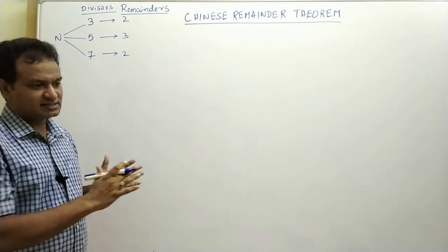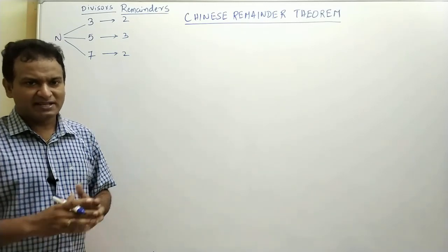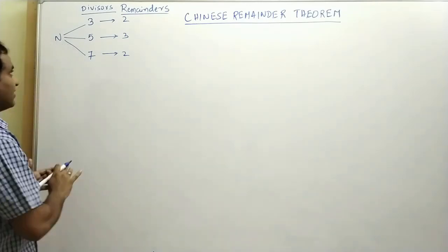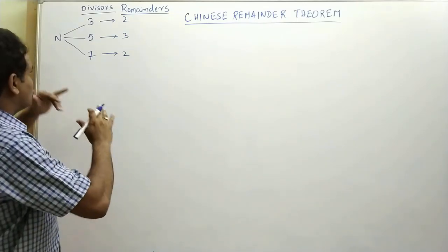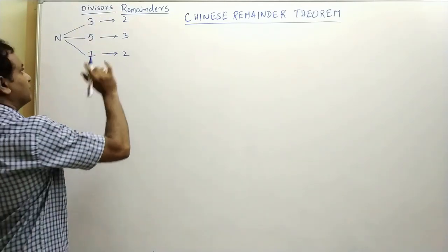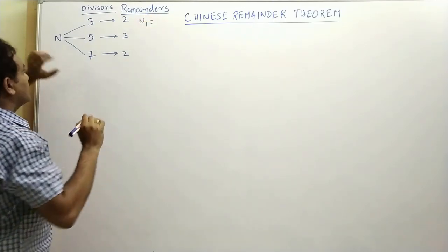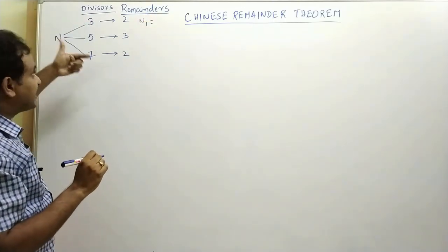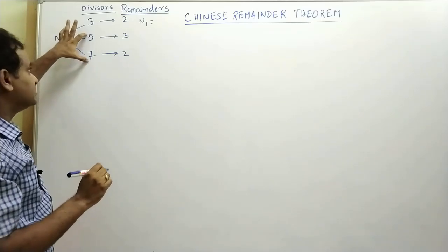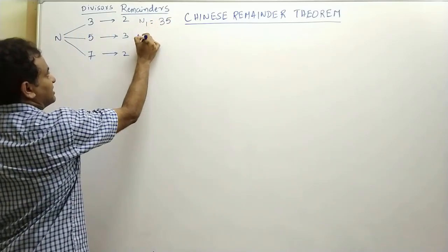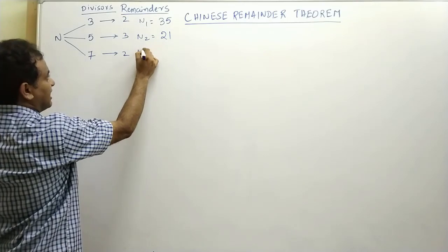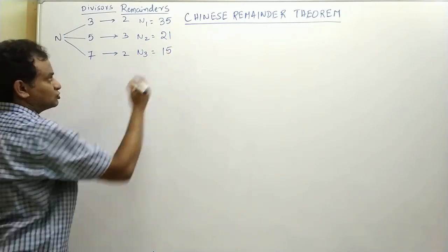Even though this procedure appears to be a bit difficult, please try to learn the concept, and we will subsequently discuss the two shortcut techniques. To find the minimum number satisfying this condition through the Gauss algorithm, first find the pairwise products of the divisors. We find n1 by multiplying all three divisors and dividing by d1, giving d2 × d3 = 7 × 5 = 35. Similarly, n2 = 3 × 7 = 21, and n3 = 3 × 5 = 15.